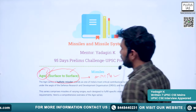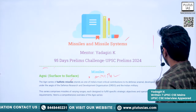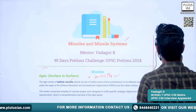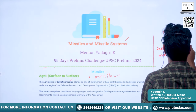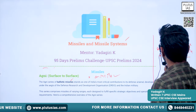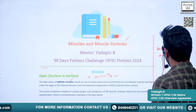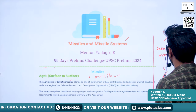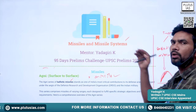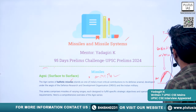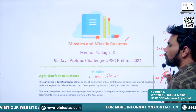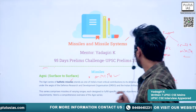The Agni series is a ballistic missile system. There are two types of missile systems: ballistic missiles and cruise missiles. In ballistic missiles, the trajectory is parabolic — the missile launches, exits the atmosphere, re-enters, and hits the target. During ascent, fuel is used; during descent, only gravitational force directs the missile to its target.